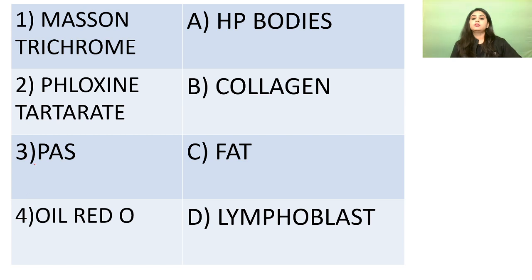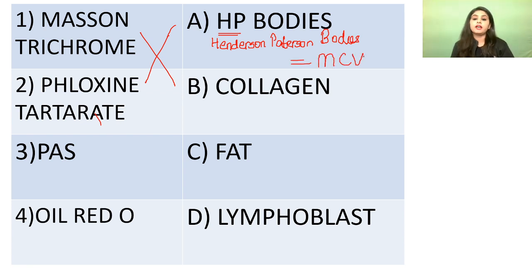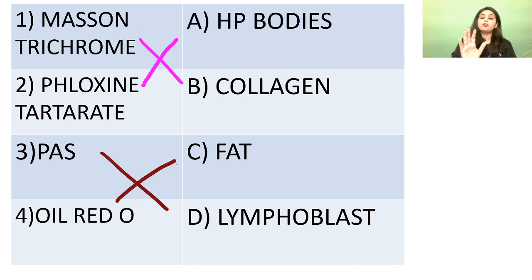I'll show you images of these stains after we match them. Masson trichrome stains collagen. Phloxine tartrate stains HP bodies — Henderson-Patterson bodies — which are seen in molluscum contagiosum. PAS is for lymphoblast. Oil Red O is for fat.